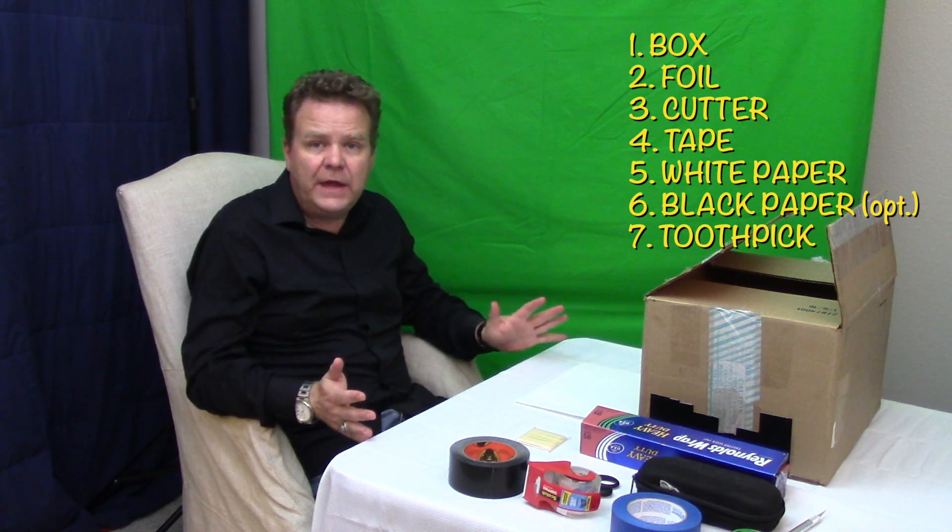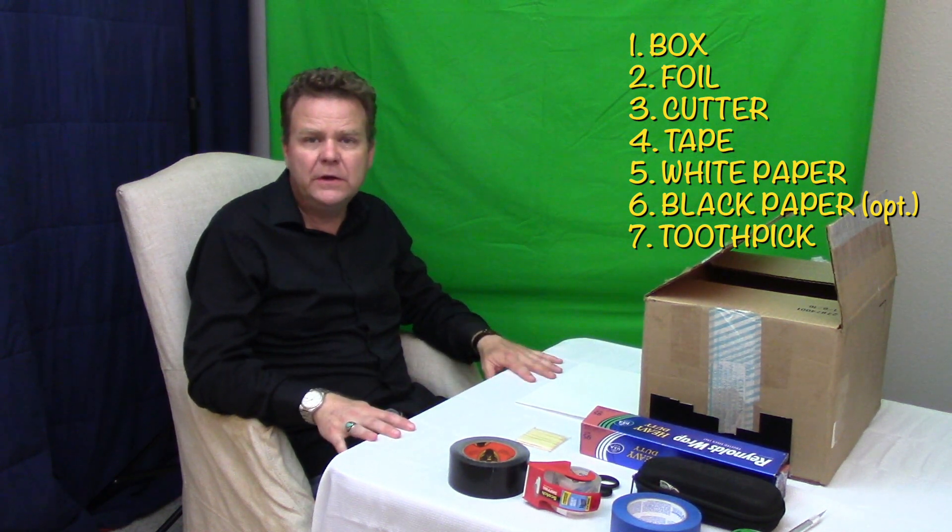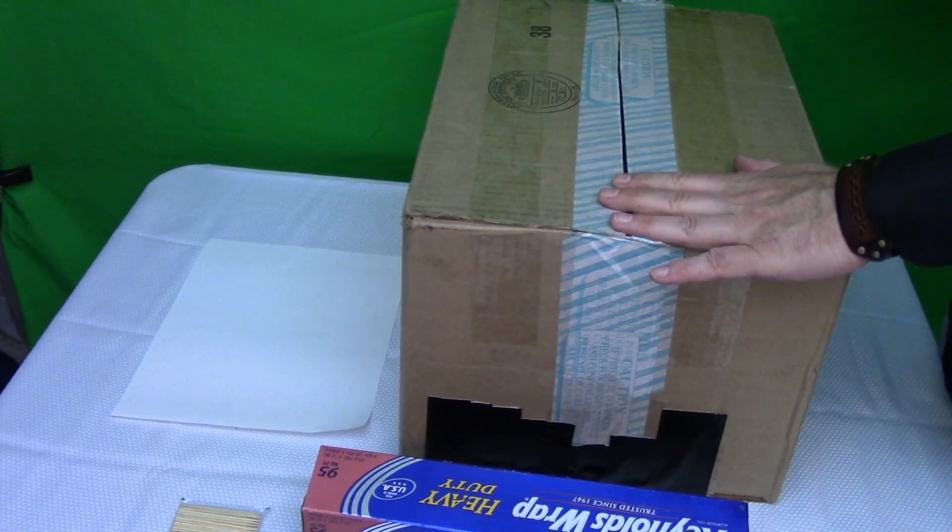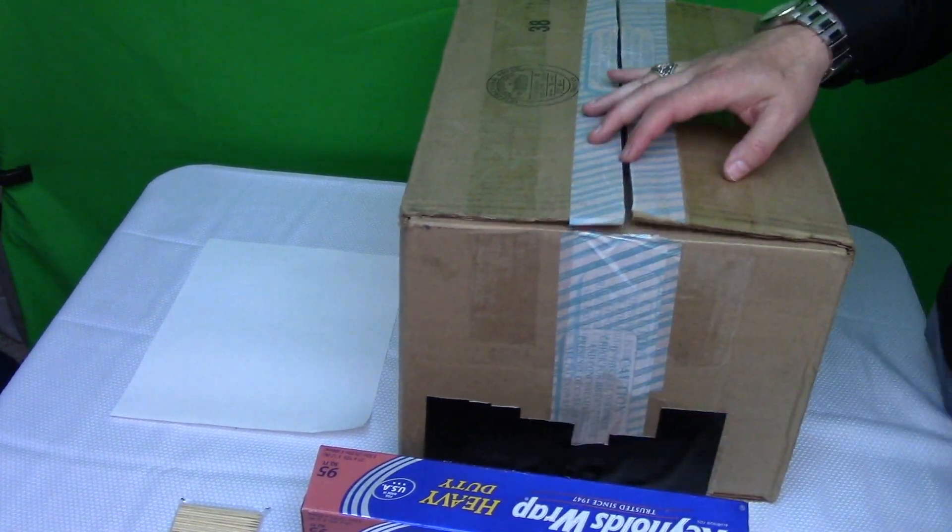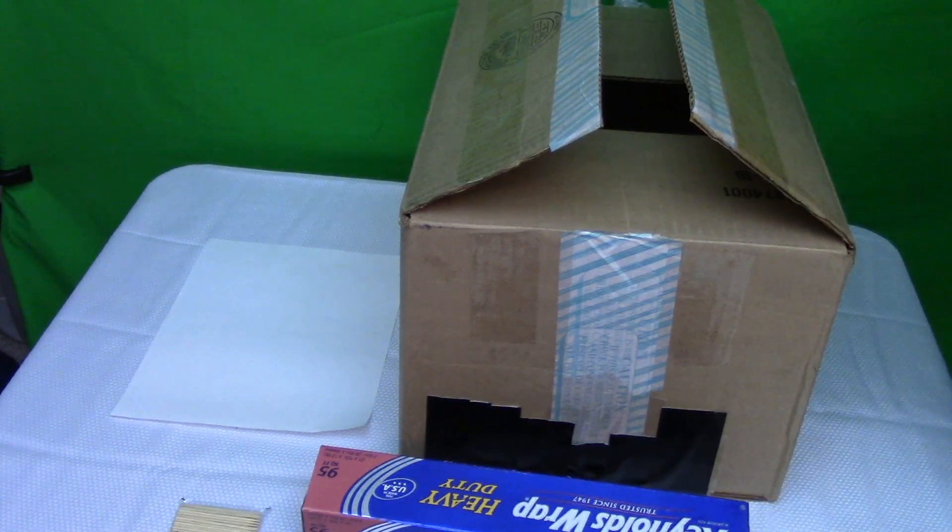So I'm going to change the camera angle so that you can see what I'm doing a little better. And let's go ahead and make this camera obscura. The first step in making the camera obscura is we want to make an opening on the box that we're going to cover with the tin foil. And that will be where the light will come in.